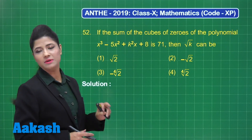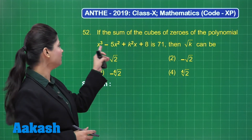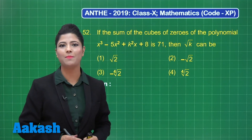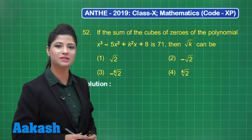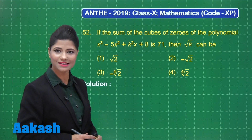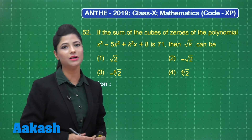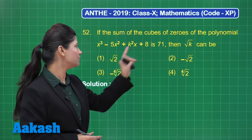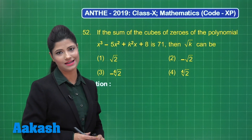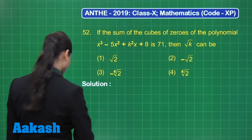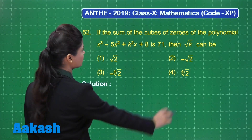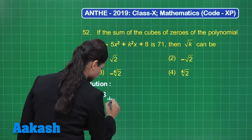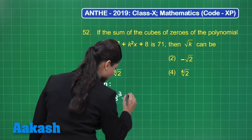Then alpha plus beta plus gamma is minus b by a, which is 5 in this case. Alpha beta plus beta gamma plus gamma alpha is equal to c by a, which is equal to k squared in this case. And alpha times beta times gamma is equal to minus d by a, which is minus 8 in this case. Here we are talking about the sum of cubes of the zeros, that is alpha cubed plus beta cubed plus gamma cubed.